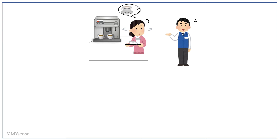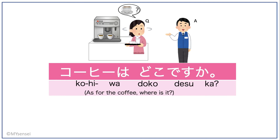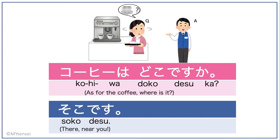How about this woman who is looking for coffee? Her question would go like this: 'Kouhi wa doko desu ka?' And the waiter would say, 'Soko desu,' since the woman is closer to the coffee machine than he is.